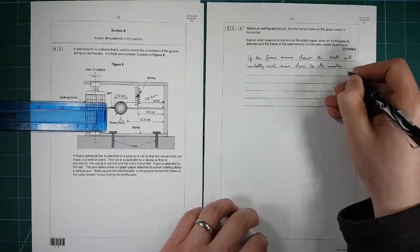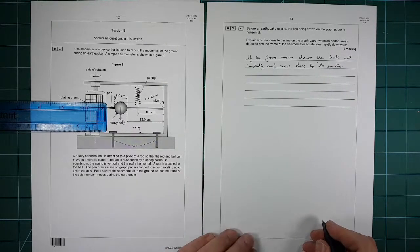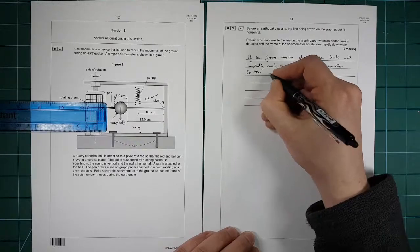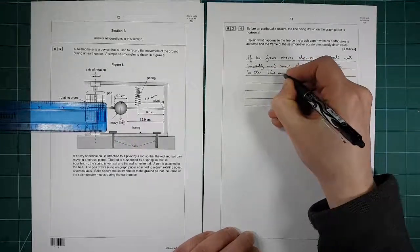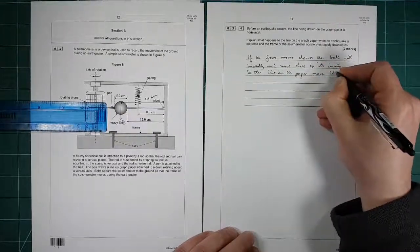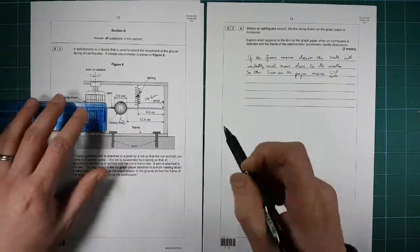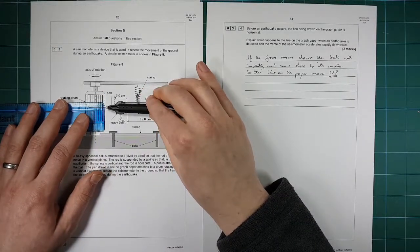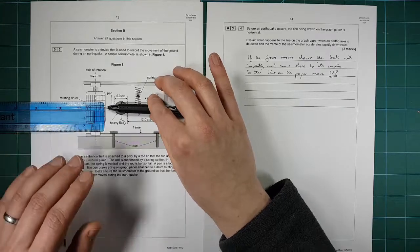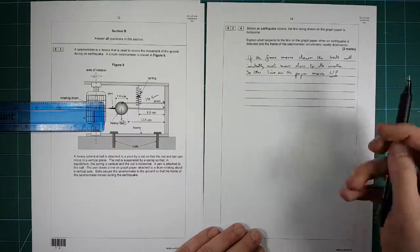If the whole thing moves downwards and the ball stays still, then if you think that's the paper there, the whole thing moves downwards and the ball stays still, the pen actually moves to the top, so it draws a line going upwards. So if the frame moves down, the ball will initially not move due to its inertia, so there's nothing accelerating it initially. Therefore, it's not going to move, so the line on the paper moves up. So that's really important: paper goes down, line on the paper therefore goes up because the ball has stayed, the pen has stayed still, so the line on the paper moves up.